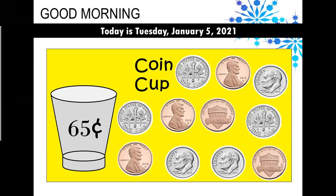Now let's figure out the coins themselves. We are going to have to start with the dimes first. So we'll start with each dime counting by 10s, and then switch over to counting by ones. So 10, 20, 30, 40, 50, 60, 61, 62, 63, 64, and 65. 65 cents in our coin cup today.